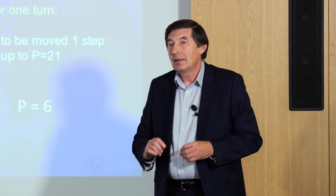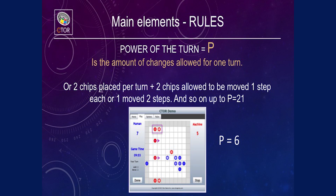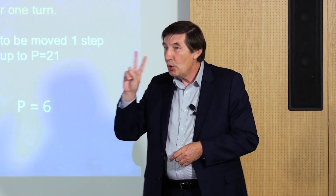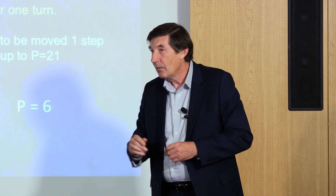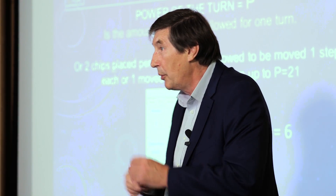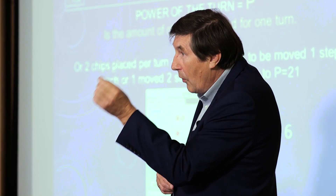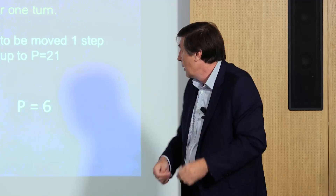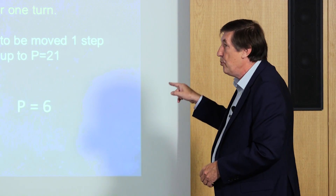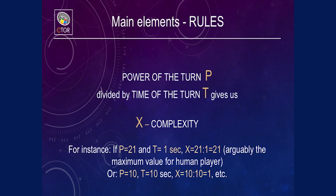How many squares change color in a more complex case? I'll explain. Two chips put — that's two. Two chips move — one move, how many changes? Two, because you move from one square to another square. Two changes. Together, we have P, power of turn, equal to six. Power of turn is a very important thing.